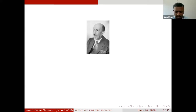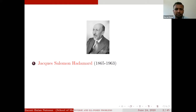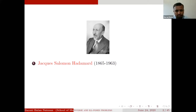Let us start with some history of well-posedness. The notion of a well-posed problem was introduced by Professor Jacques Salomon Hadamard in 1902. In 1923, he published an article on lectures on the Cauchy problem for linear partial differential equations, in which he clearly explained well-posed and ill-posed problems. He was a French mathematician who contributed to many areas: number theory, complex function theory, differential geometry, and partial differential equations. He is known for the proof of the prime number theorem, Hadamard product, and Hadamard matrix.